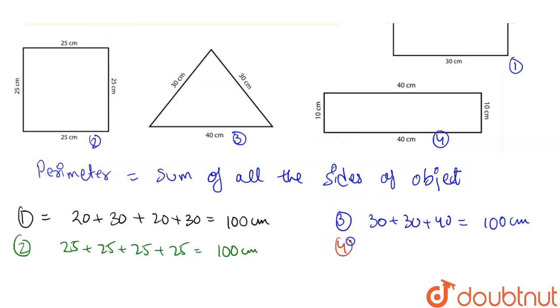And for the last part, that is fourth part, it is 10 plus 40 plus 10 plus 40. This is also 10 plus 40 is 50 and 50, 50 plus 50 is 100, 100 centimeter.